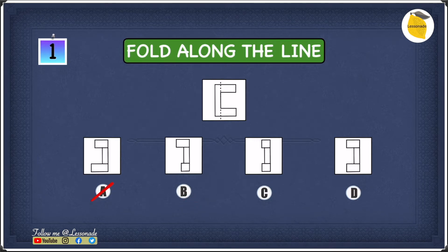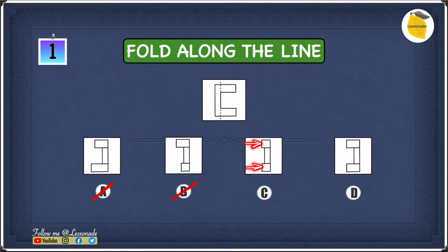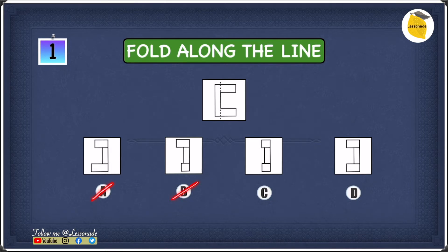In B, the bottom one is a bit shorter than the top one, so they're different lengths — we can cross off B as well. In C, both flaps are the same length and same size, so we keep C for now. In D, the two flaps are also the same length. So out of the four options, we've crossed off A and B, leaving us with C and D.